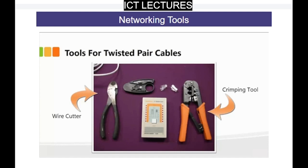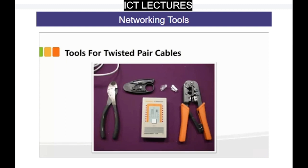Typically, when you go to a store or order a roll of cable — let's say UTP cable category 5 — they'll give you a length of cable, say 100 meters or 200 meters, depending on your requirement and the size of your network. Once you get the cable, it's essentially a raw cable. You need to take the ends and use these tools to attach the RJ45 connectors so they can be plugged into your computer, laptop, network switch, hub, or servers.